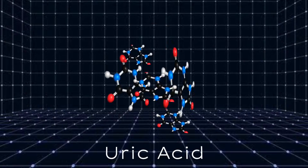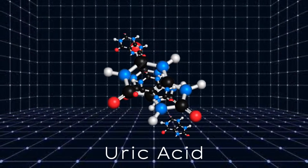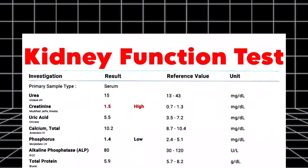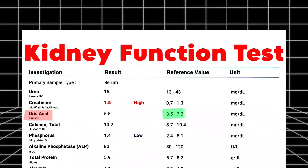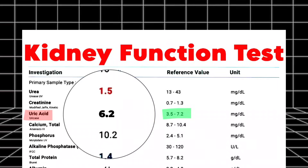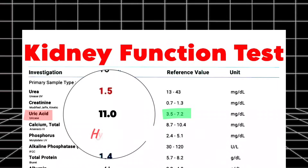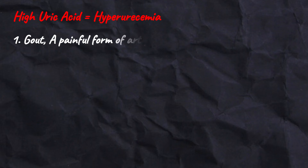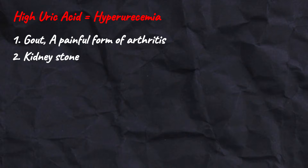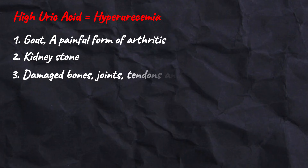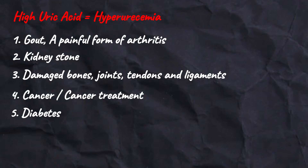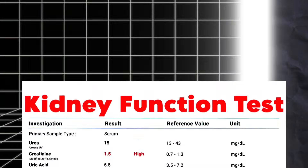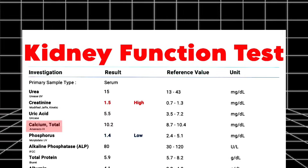High levels of creatinine may indicate kidney disease, dehydration, or excessive protein intake. Next in the kidney function test is uric acid. Uric acid is a waste product created when the body breaks down purines. The normal level of uric acid in blood is between 3.5 to 7.2 milligrams per deciliter. High levels of uric acid in the blood is called hyperuricemia, and it is seen in gout — a painful form of arthritis — kidney stones, damage to bone joints, tendons and ligaments, cancer or cancer treatment, diabetes, and hypothyroidism.